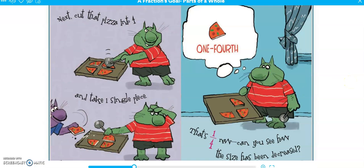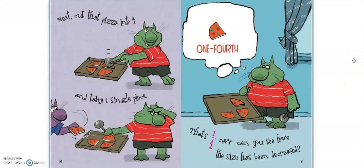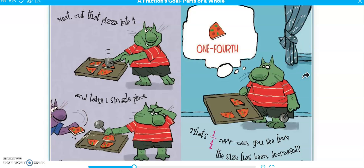Next, cut the pizza into four and take one single piece — one fourth. Now can you see how the size has been decreased? So a half is, if you're having half of it, and then now you have one fourth of it. One fourth is less than that one half, right? Because you're cutting those into smaller portions.